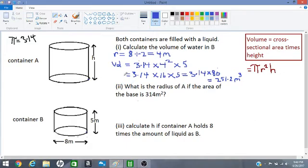Part 2. What is the radius of A if the area of the base is 314 meters squared? So this is the base. Let's look at tank A now, container A.